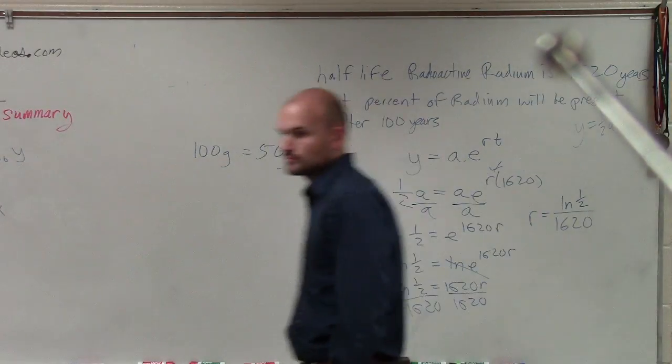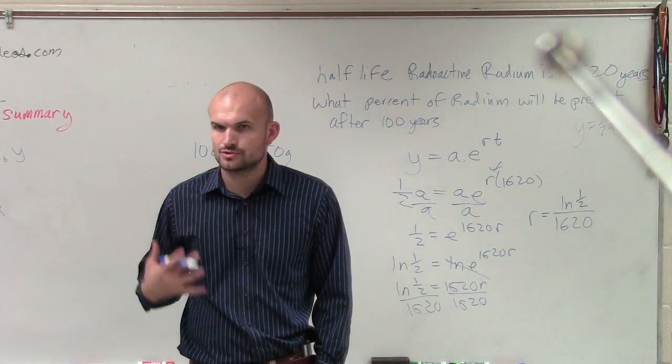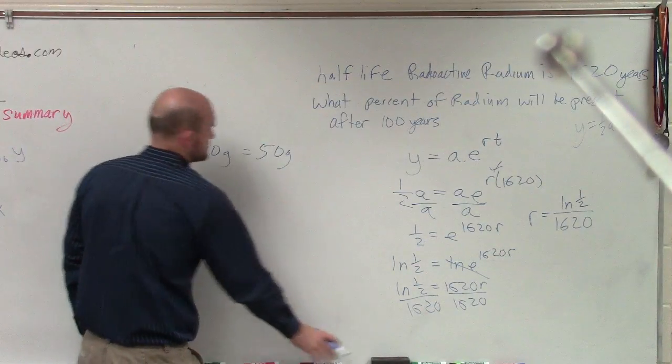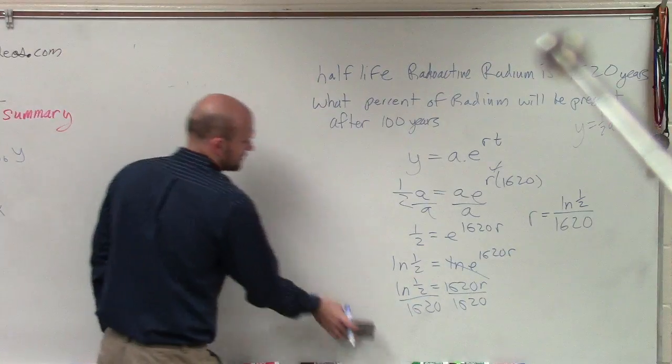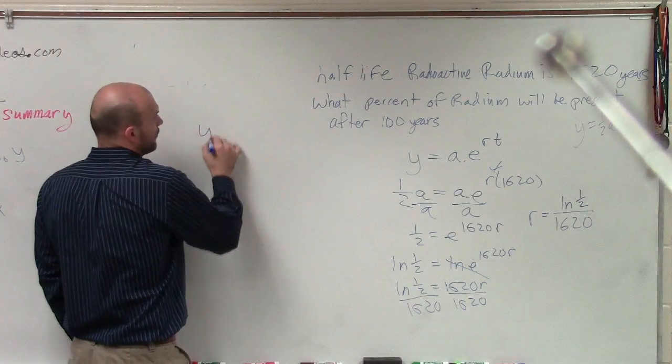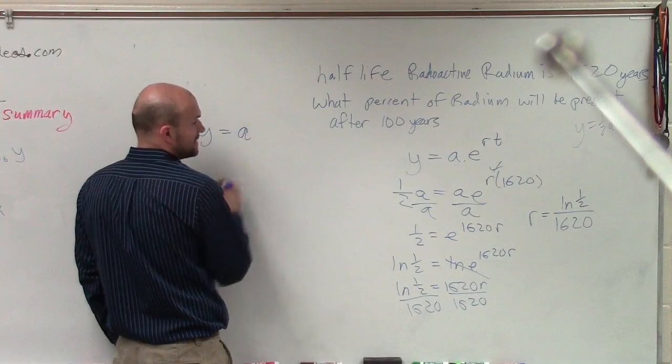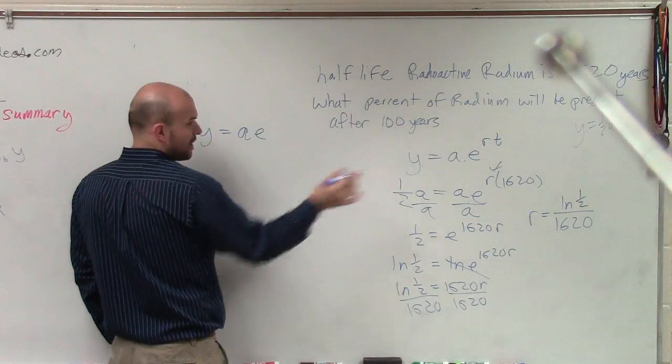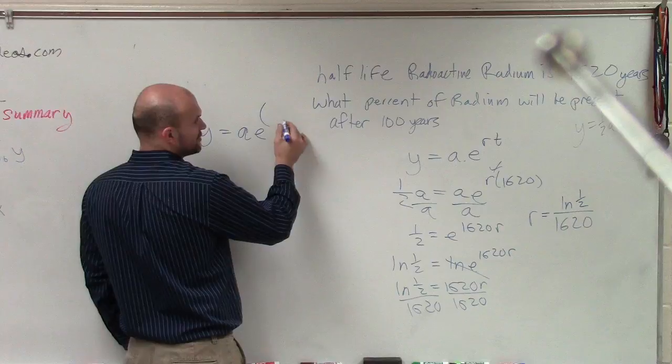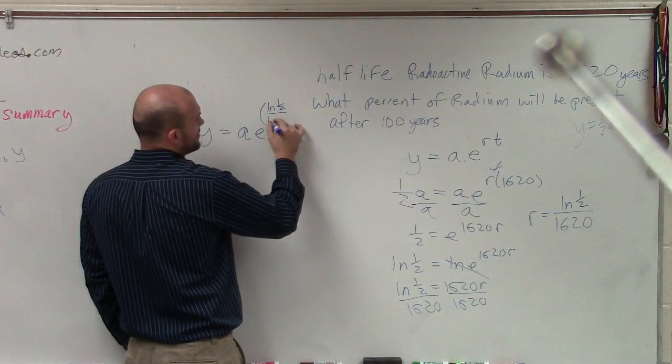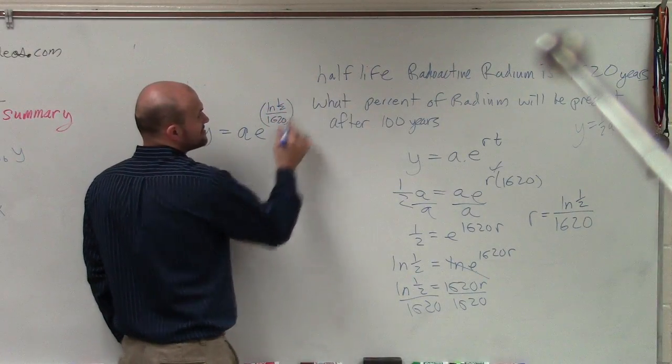OK, so now let's go back to our equation. So we have Y equals our A, which is our initial amount, which we still do not know. E, do we know our R though now? Yeah, R is a crazy equation, right? It's ln of 1/2 divided by 1620 times T.